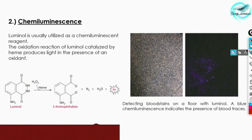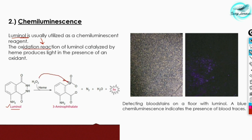Luminol is used as a chemiluminescent reagent and the reaction is based on oxidation — just like every other preliminary examination of blood. The substrate luminol is oxidized to a chemiluminescent product in the presence of an oxidizing agent, hydrogen peroxide. If blood is present in the suspected stain, its heme group acts as a catalyst, altering the reaction so that luminol is oxidized to 3-aminophthalate, releasing nitrogen and water, and emitting visible light.